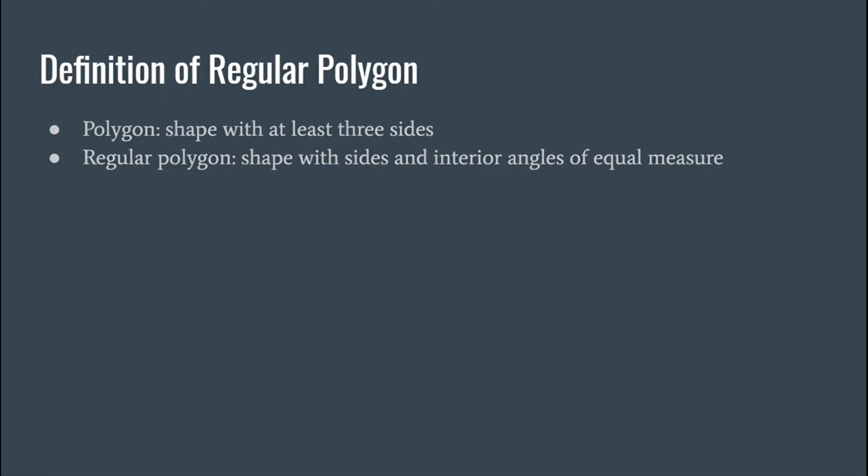To get the total or the sum of the interior angles, we use this formula here: 180 degrees times the quantity n minus 2, where n is the number of sides of your shape. This will give you the sum of all the interior angles.